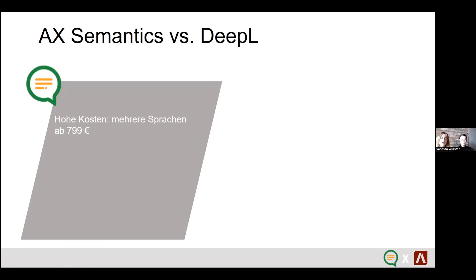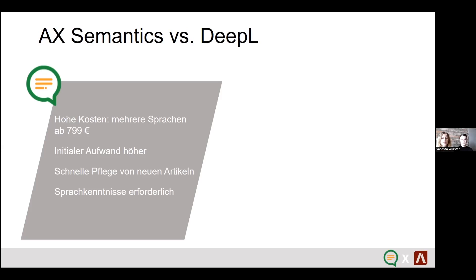With AX, in comparison to DeepL, you see that we have higher costs — several languages for about 800 euros. The initial effort is higher. It takes more time to work with AX than to work merely with DeepL, but it is easier to maintain products and to add new items. Language skills are required, and you have error-free texts at the end of the day.